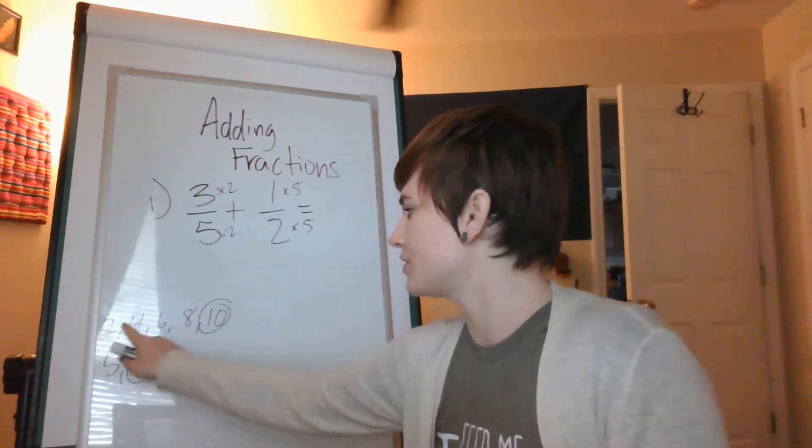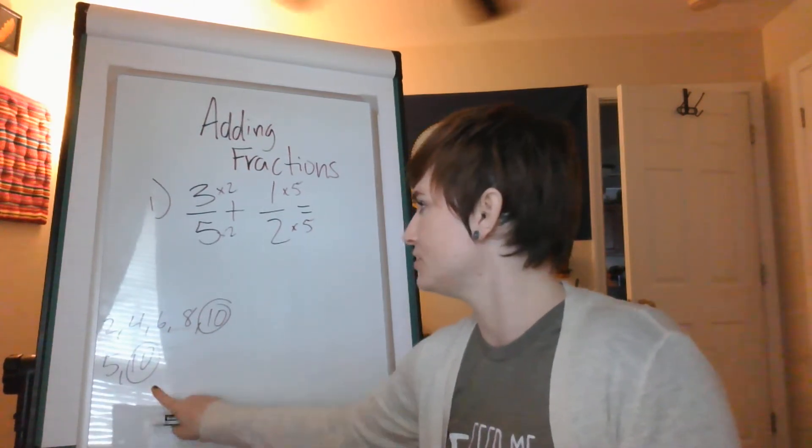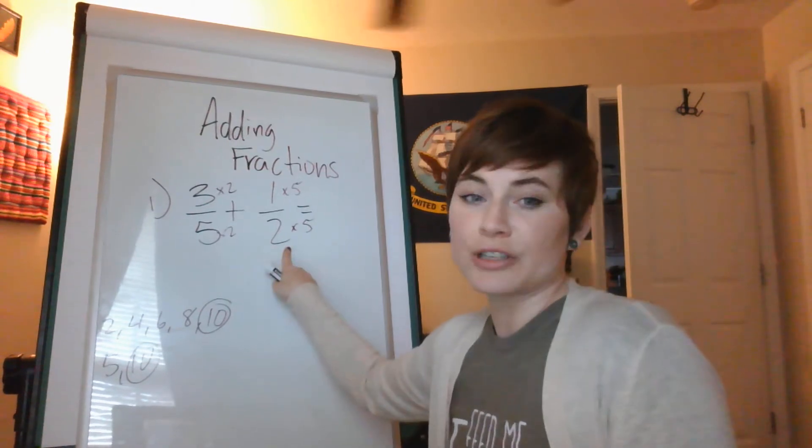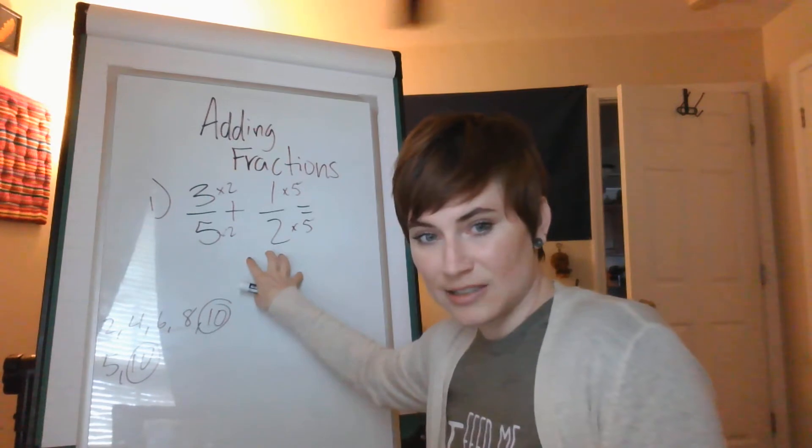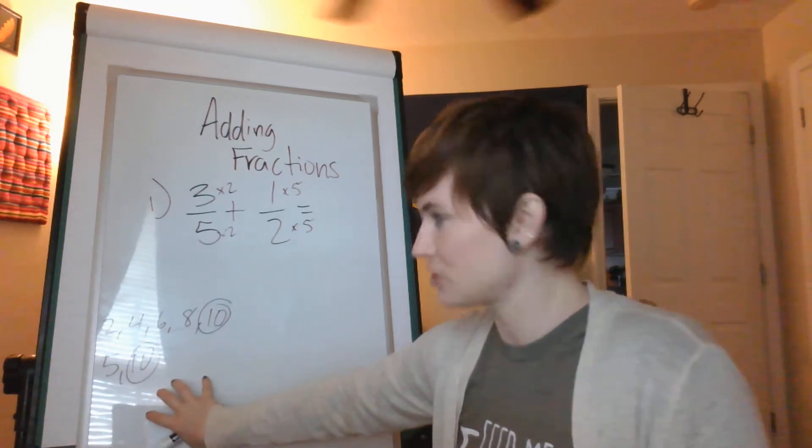That's two times one, two, three, four, five and that's five times one, two. And what do you know? That's what we were going to do in the first place. But this way, whenever you're doing the math up here, you already have the information down here.